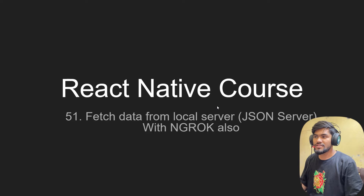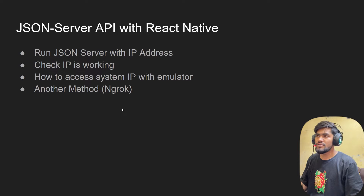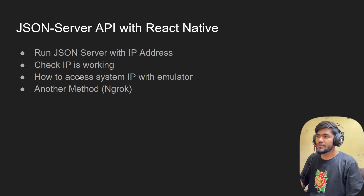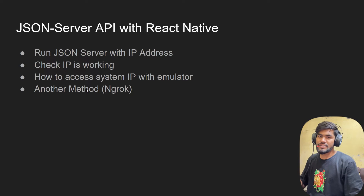We're going to cover all that. First, we're going to run the JSON server with an IP address — instead of localhost we'll use the IP address, and that will sort it out. The second method we're going to try is called ngrok, which is much more popular. Let's quickly try the IP address method first.